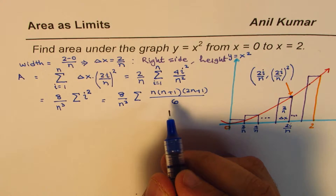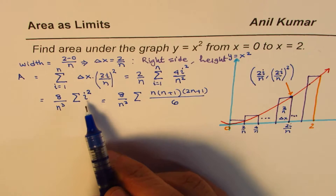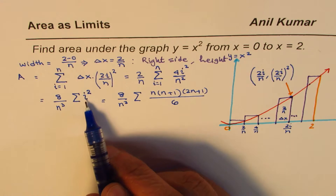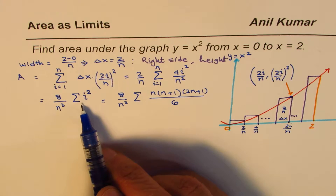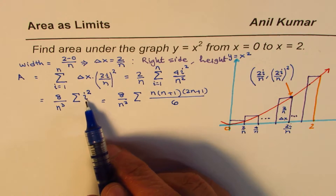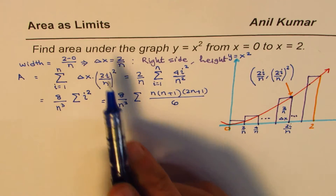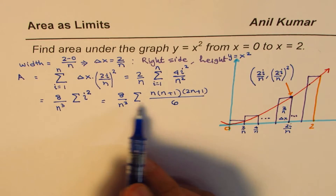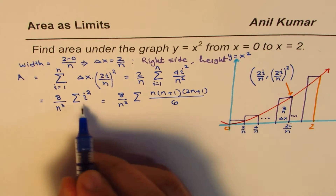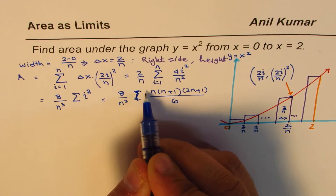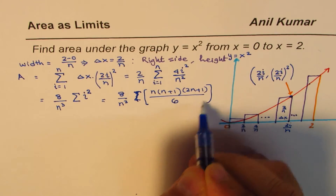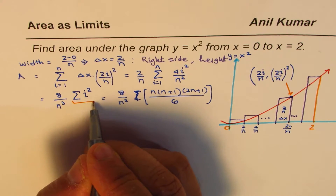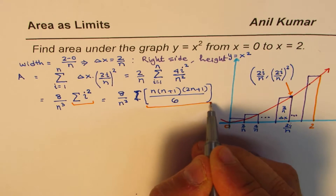We apply this formula which was derived earlier. You should know the formulas for the sum of natural numbers, sum of their squares, and sum of their cubes — these are very important for questions on this topic. So we have applied the sum of i² formula here.